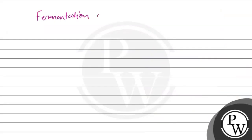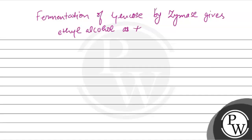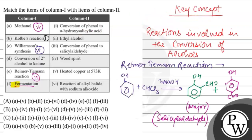Fermentation of glucose by zymase gives ethyl alcohol as the by-product. So if we look at fermentation of ethyl alcohol as a by-product, so F is 2.